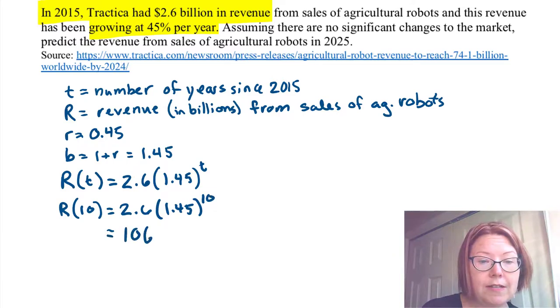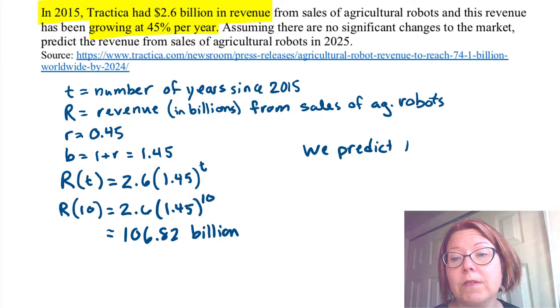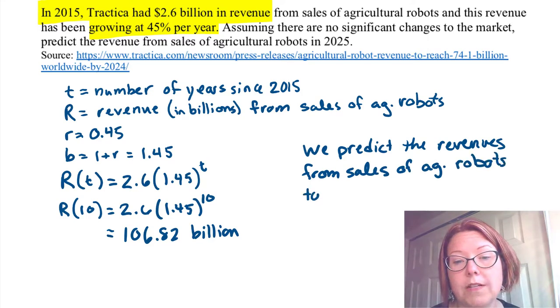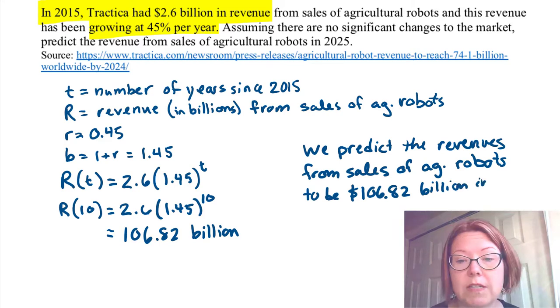Which is 106.82, and that's in billions. So we could say that we predict the revenues from sales of agricultural robots to be 106.82 billion in 2025.